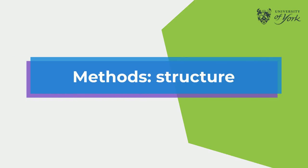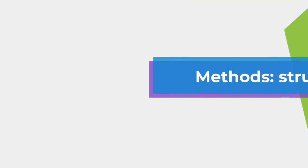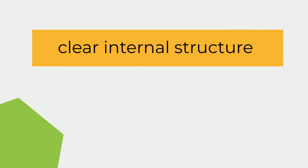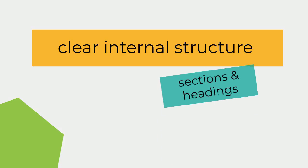Effective structure and organisation is essential for the method section, as it underpins the whole of your research. The method needs a clear internal structure, often much more so than other aspects of writing up research. This is usually achieved using sections and headings.